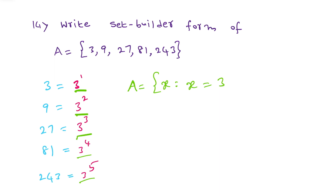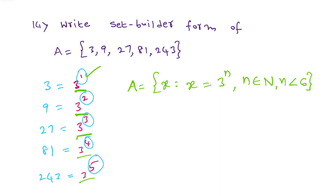The power keeps changing: 1, 2, 3, 4, 5, so write it as power n. What about n? We are starting from 1 onwards, so n belongs to natural numbers (capital N). Since natural numbers are infinite, we must specify where we stop — we go up to 5, so n less than 6. This is the set-builder form.